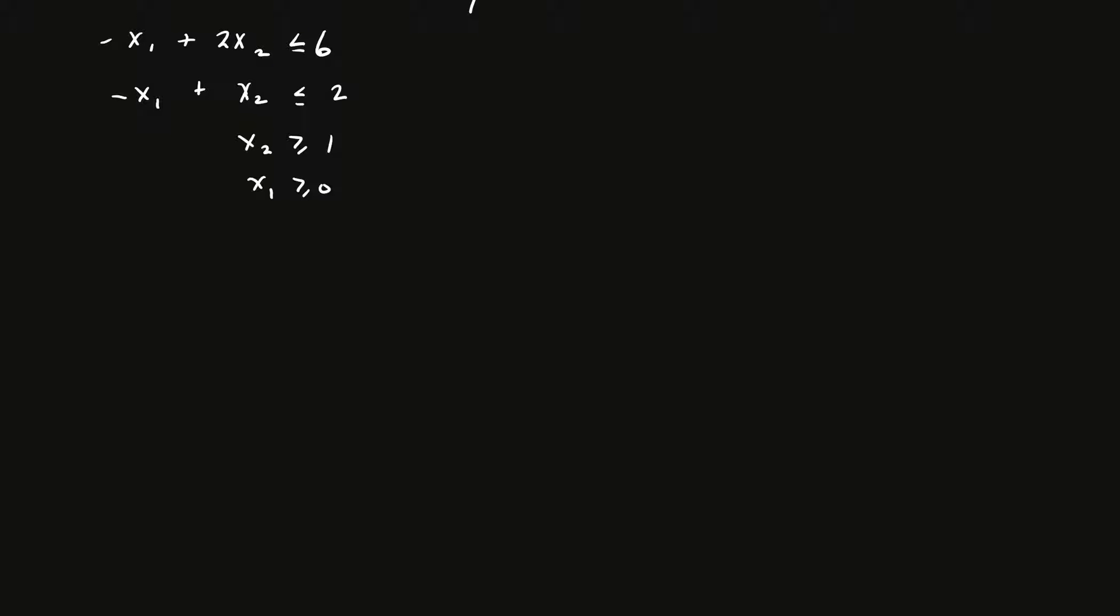Alright, so in this video we're going to take a look at a couple of examples, examples determining direction of unboundedness, and we're going to do it two ways. Graphically is one way, and then using the null space. Here's the region we're going to work with.